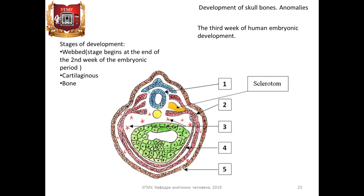Anatomical development of cranium skull bones occurs in three stages: membranous, cartilaginous, and bone. Cranial bones develop from the sclerotomes of head somites, derivatives of dorsal mesoderm. The membranous and cartilaginous stages for higher mammals and humans are temporary; they pass one into another and correspond to permanent forms in phylogenesis. The membranous stage begins at the end of the second week of the embryonic period, and the cartilaginous stage from the second month.